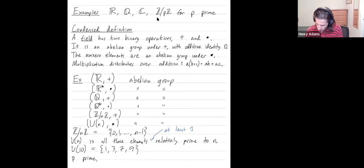So if I ask when p is prime, what is Up? Well, it's all the numbers from one up to p minus one that are relatively prime to p. But since p is prime, that means it's everything. So this is one, two, all the way up to n minus one.